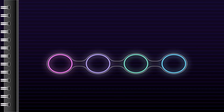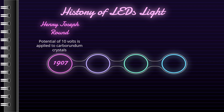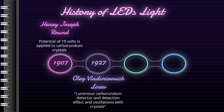Now moving on to the history of LED light. In 1907, British experimenter at Marconi Labs, Henry Joseph Round, noticed for the first time that when a potential of 10 volts is applied to carborundum, or silicon carbide crystal, it emits yellowish light. However, the first to investigate it and to propose a working theory was Oleg Vladimirovich Losev from Russia. In 1927, Oleg published a paper titled 'Luminous Carborundum Detector and Detection Effect and Oscillations with Crystals.'